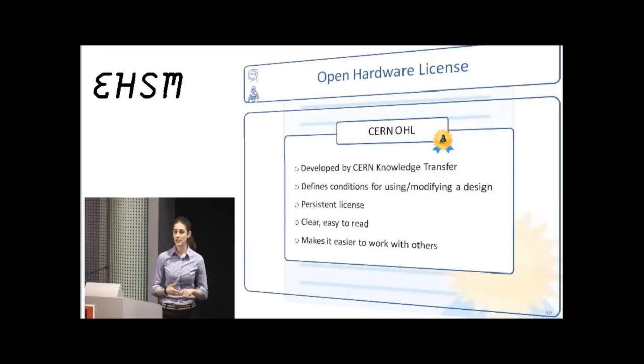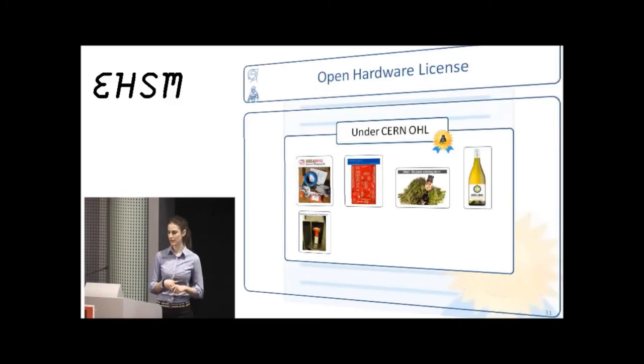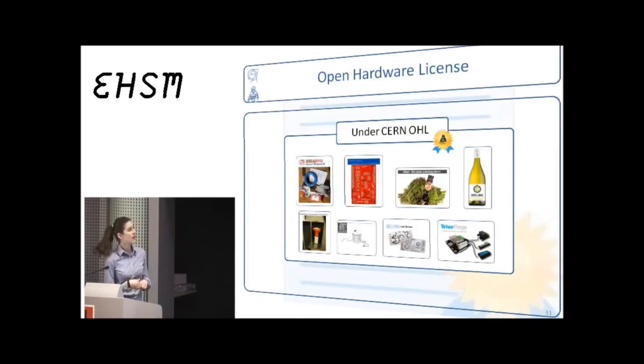It's clear and easy to read. It's just a couple of pages long. And we have seen that it has made our collaboration with others easier, especially those companies with big legal departments that need legal clarity. There's a lot of different products outside CERN and many times outside the electronics world that have been published under the CERN Open Hardware License.